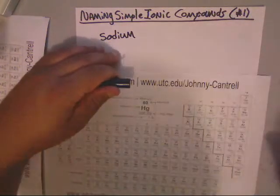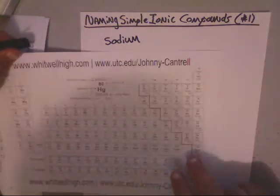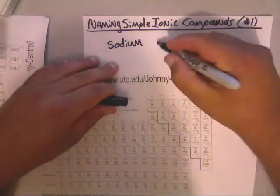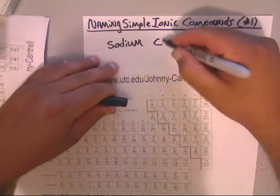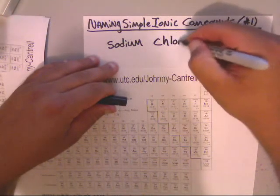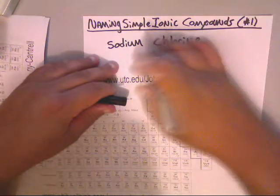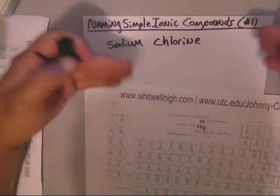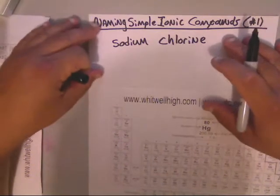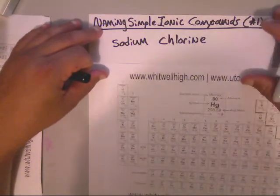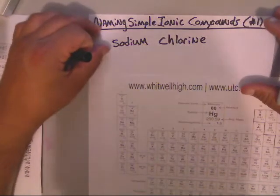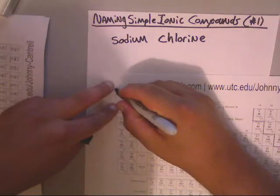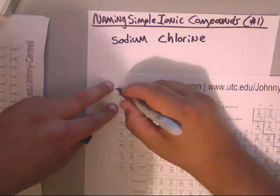We're going to start with sodium and pick a non-metal. The non-metal we're going to pick is chlorine. We'll see how we can take these two and put them together to make a compound, then I'll show you how to name it. First, you need to know that sodium as an ion has a plus one charge.